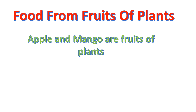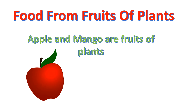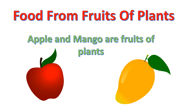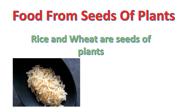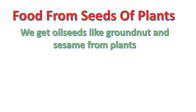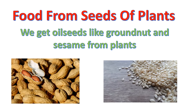Food from fruits of the plants: apple and mango are fruits of the plants and we eat them as our food. Food from seeds of the plants: rice and wheat are seeds of the plants and we eat seeds as our food. We also get oil seeds like groundnut and sesame from plants, and we extract oil from them to prepare our food.